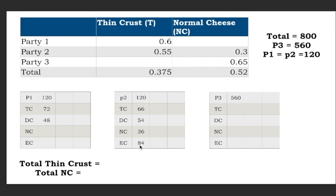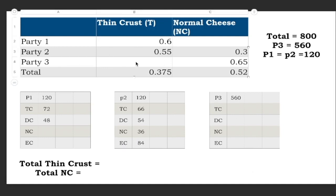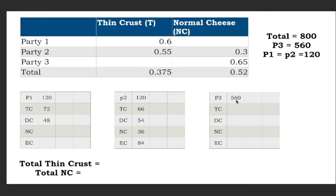At this point, I can't yet figure out how many of party 2's extra cheese pizzas are deep or thin crust. Moving on to party 3 — there's no thin crust data directly, but 65 percent of 560 are normal cheese pizzas. Calculating 65 percent of 560 gives us 364 normal cheese pizzas for party 3.